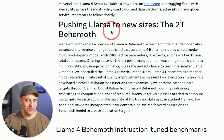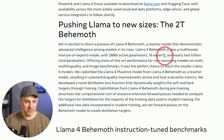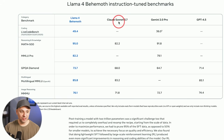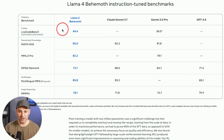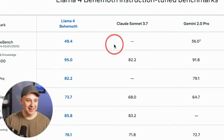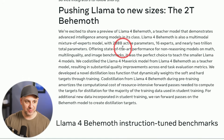The biggest model is Llama 4 Behemoth at 2 trillion parameters, with 288 billion active parameters and 16 experts. Behemoth is already outperforming Gemini 2.0 Pro and beating Claude Sonnet 3.7 in a STEM-related benchmark. Here's the wild part — this one is still in preview, meaning it's still in training, and it's already achieving these kinds of results. That is really impressive.